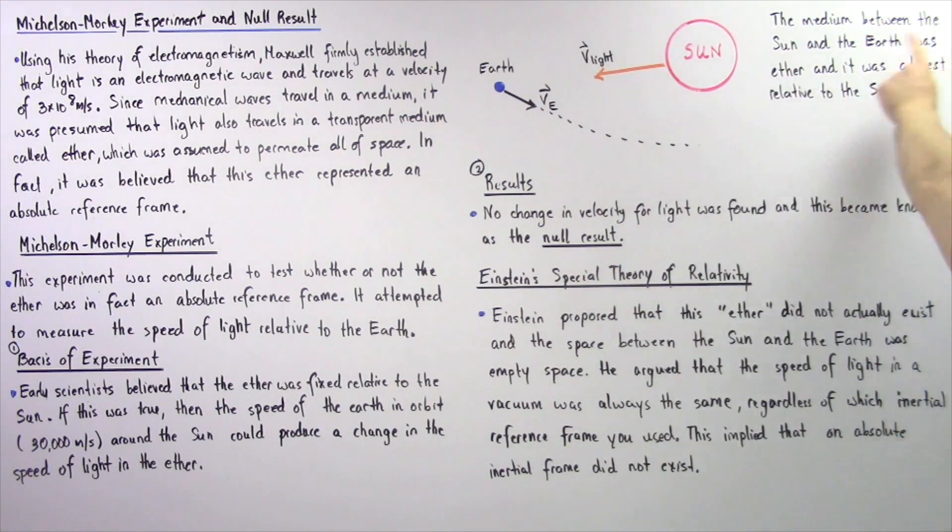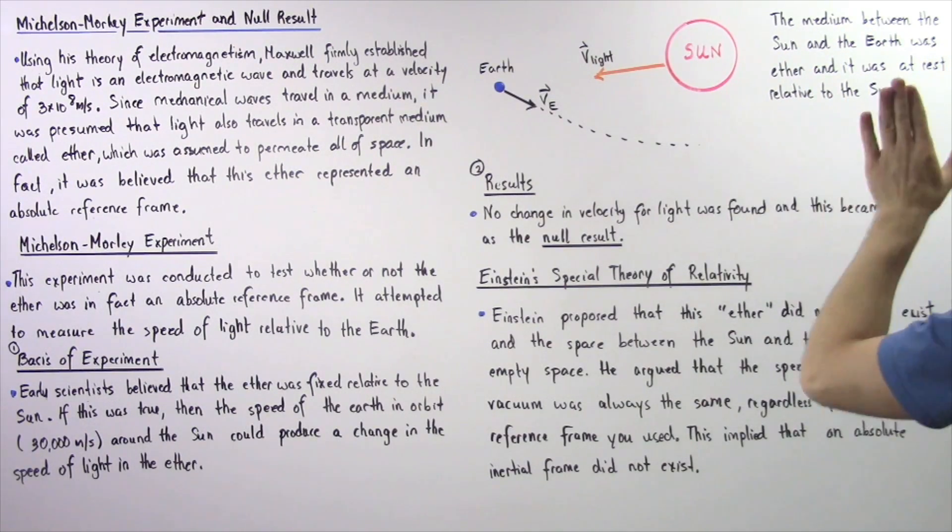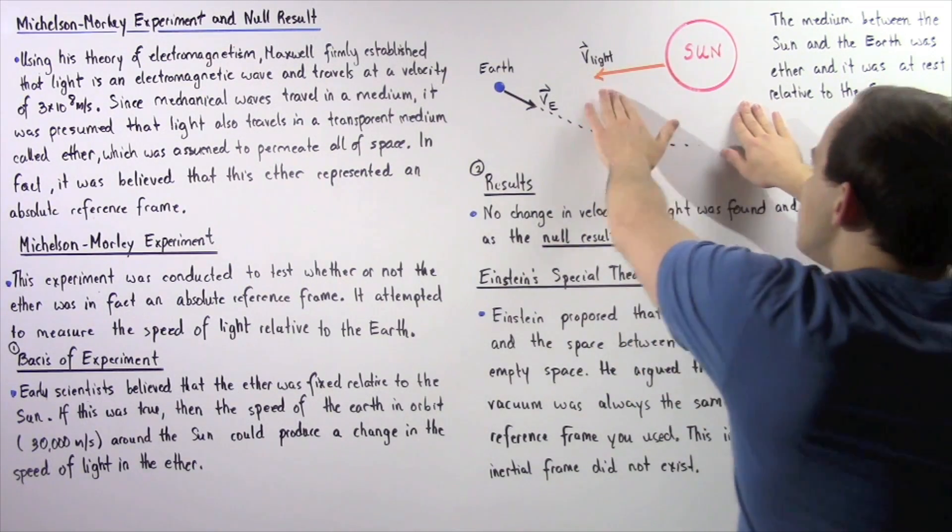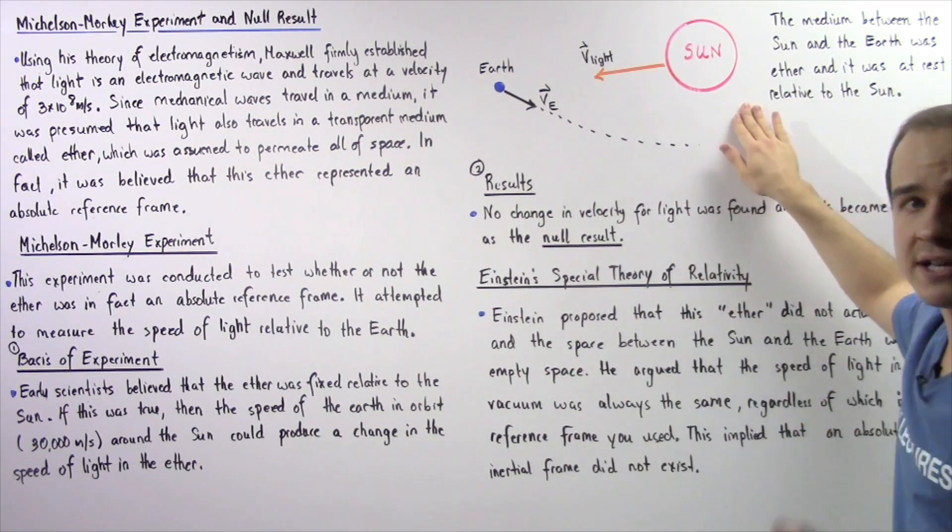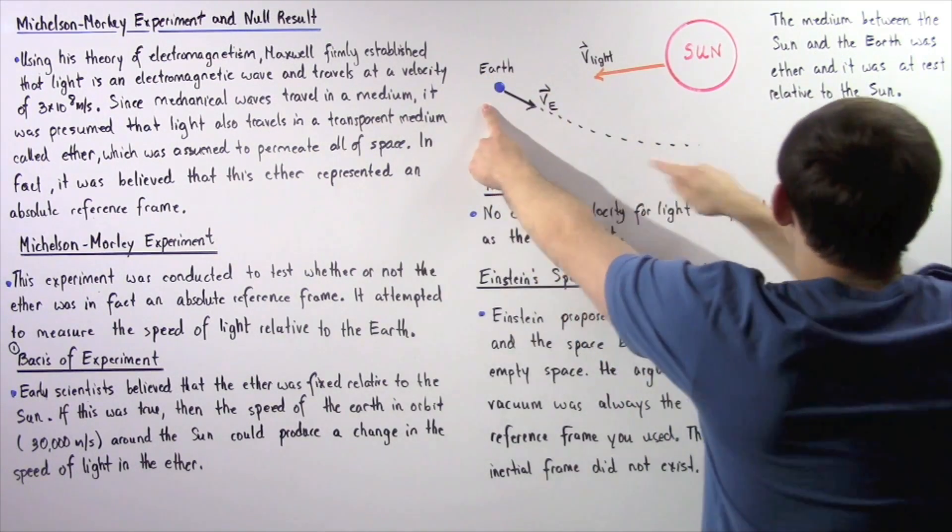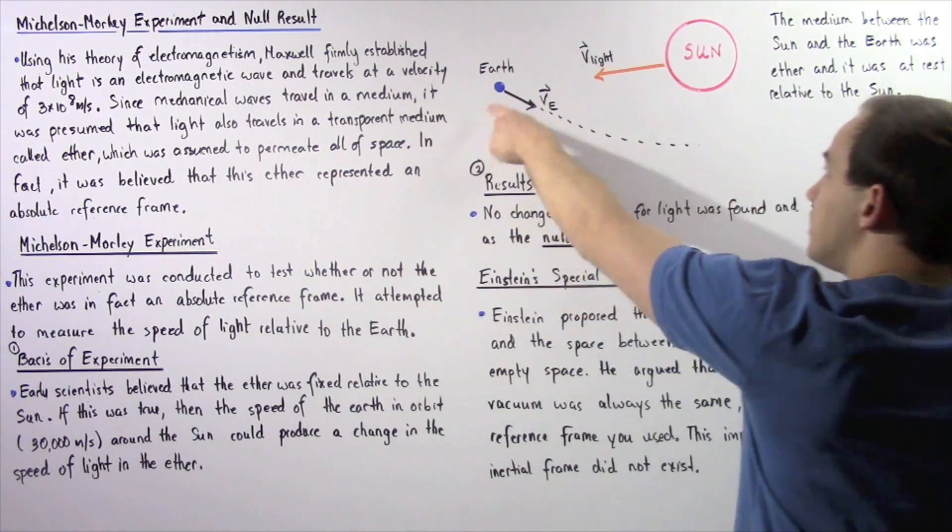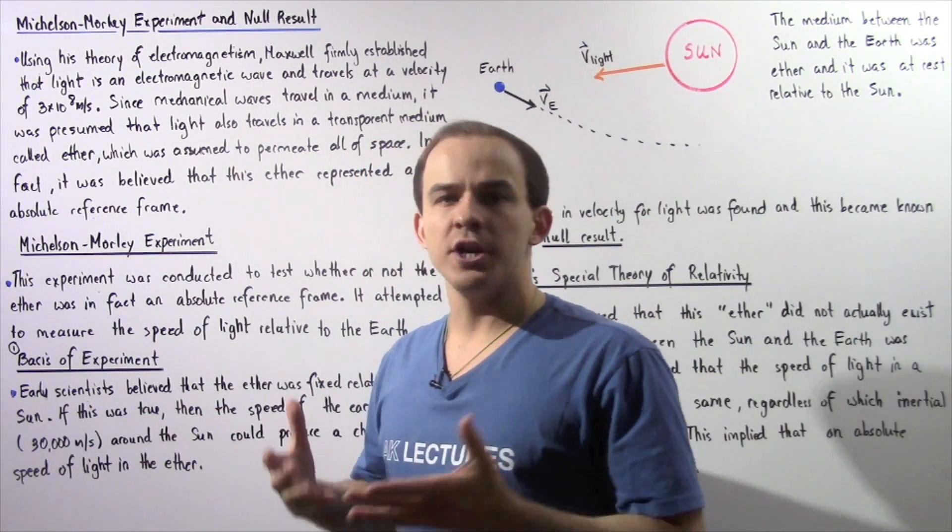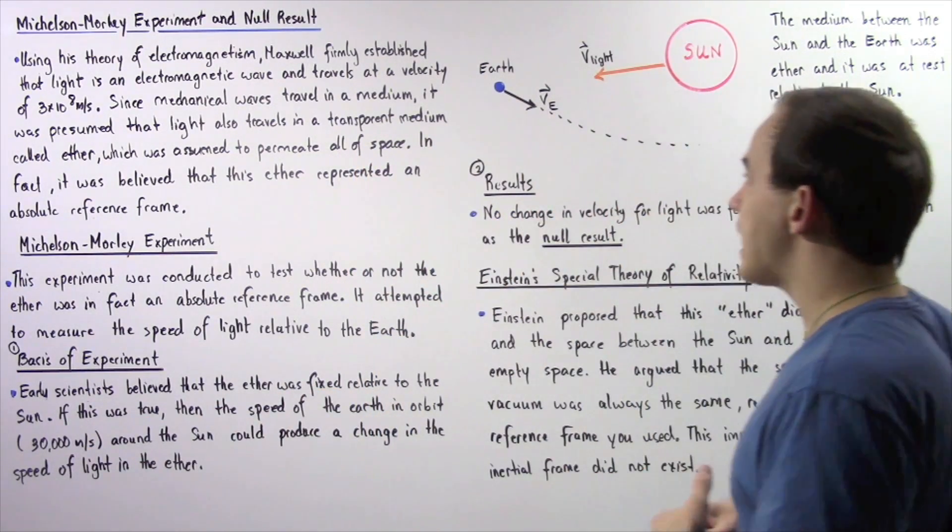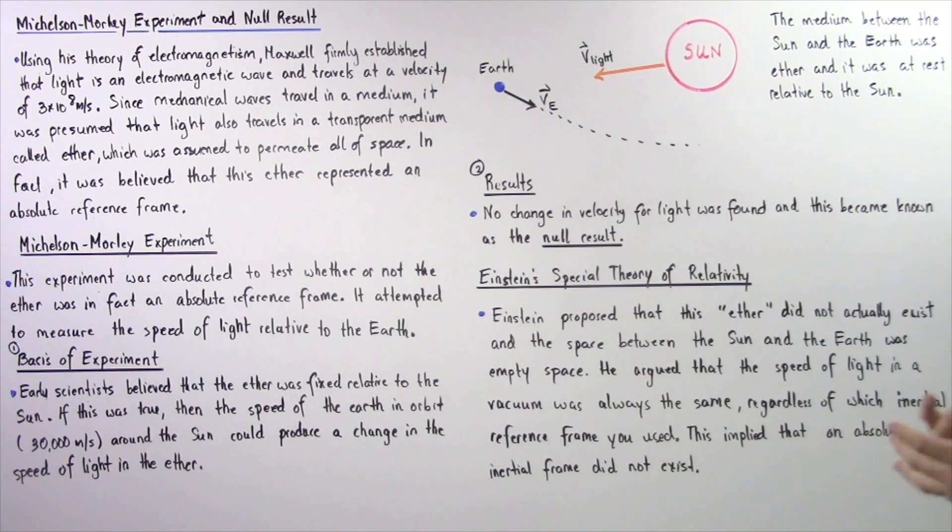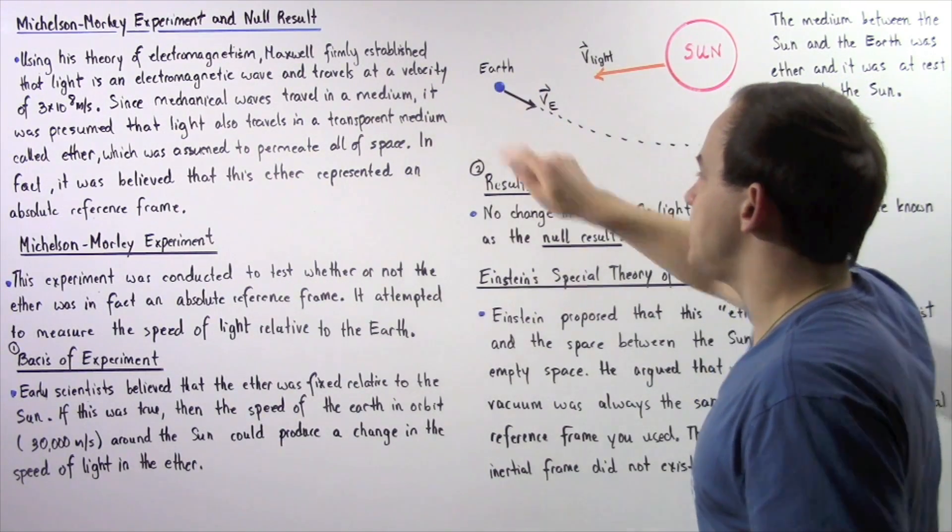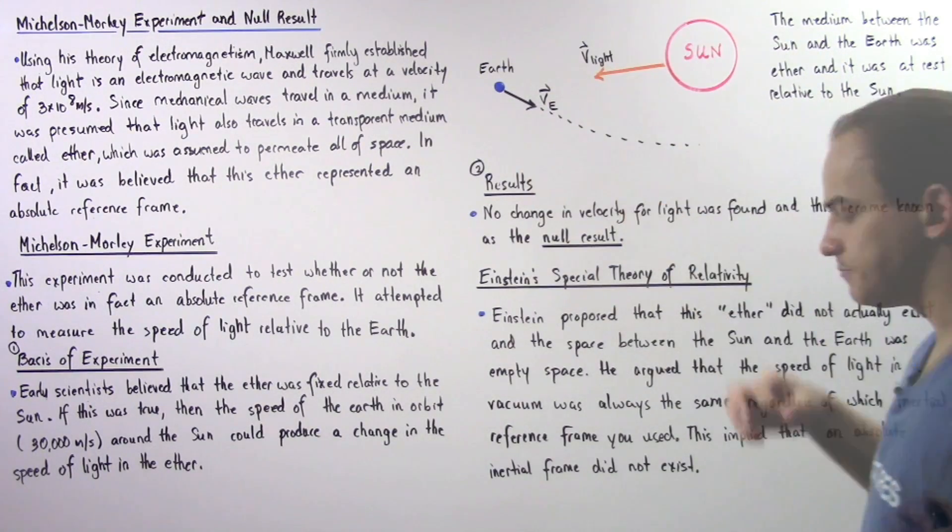So the medium between the sun and the earth was ether and it was assumed to be at rest relative to the sun. So we're assuming the sun is at rest and the ether is also at rest and the earth is moving around the following orbit around the sun with a certain velocity about 30,000 meters per second. So they tried to test the velocity of light relative to the speed of the earth as it moves around the sun.